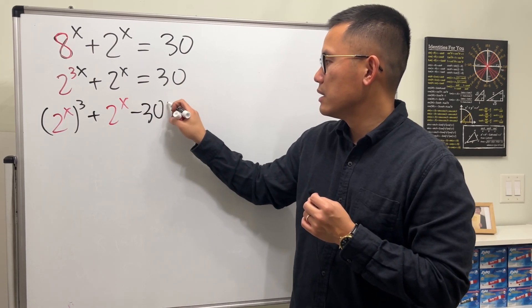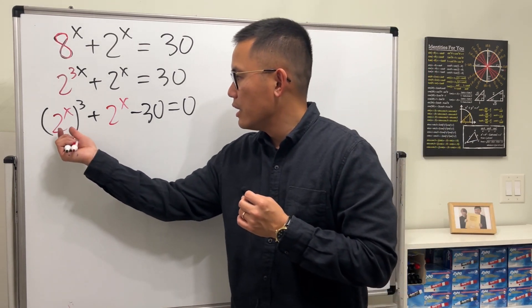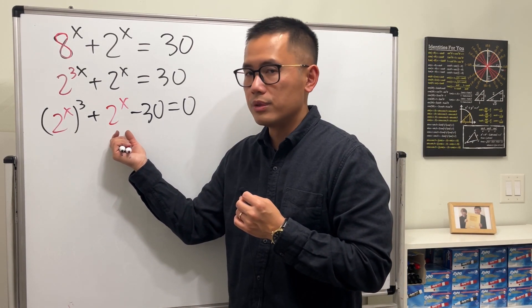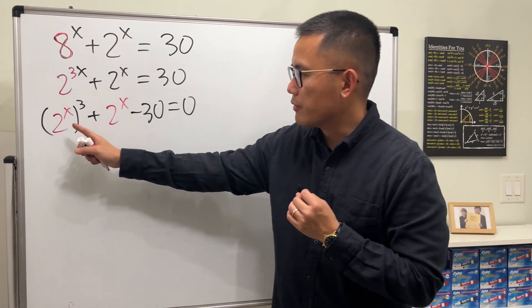Let me bring that to the other side, so we have 0. Now, you can see that if you look at 2 to the x as the input, then this is just a cubic equation in terms of 2 to the x.